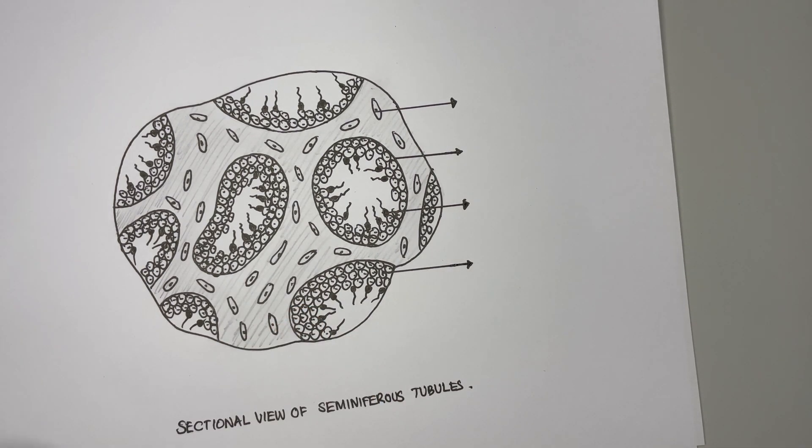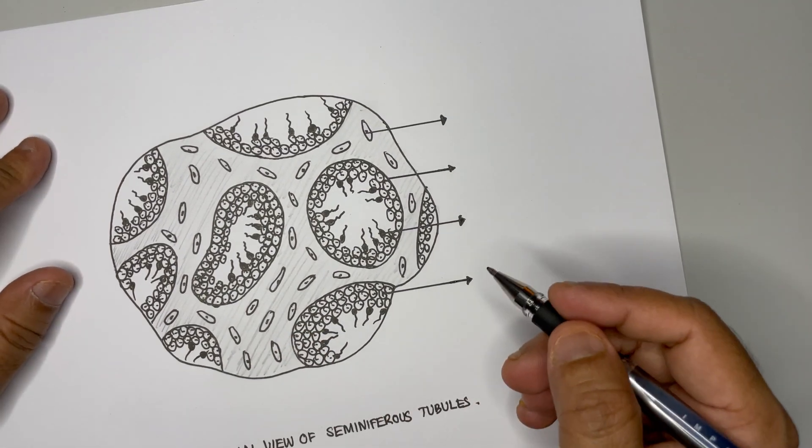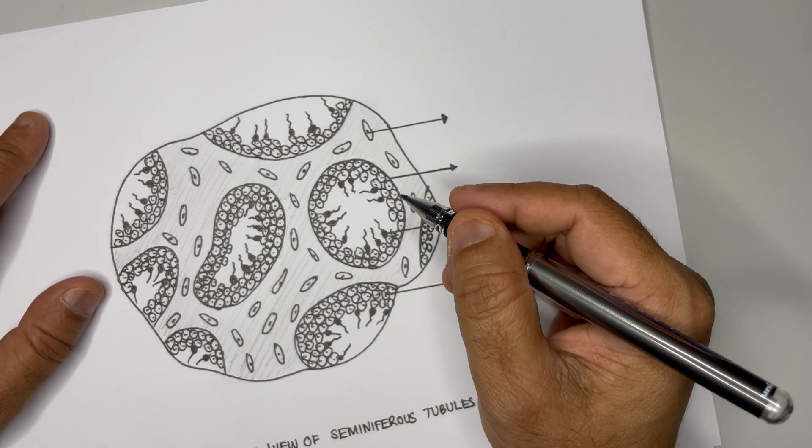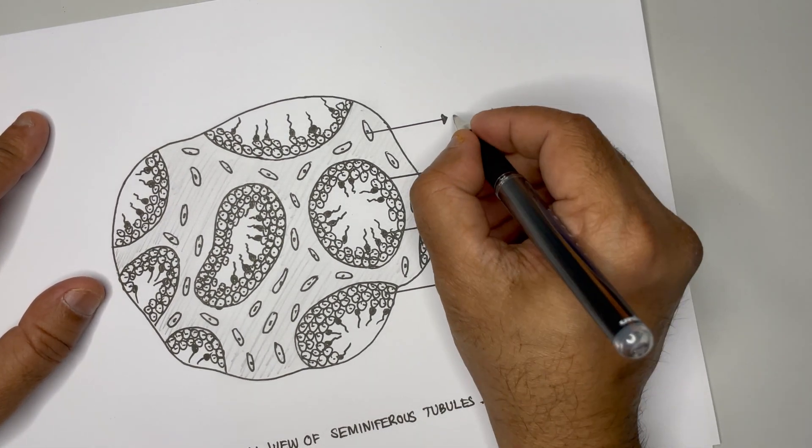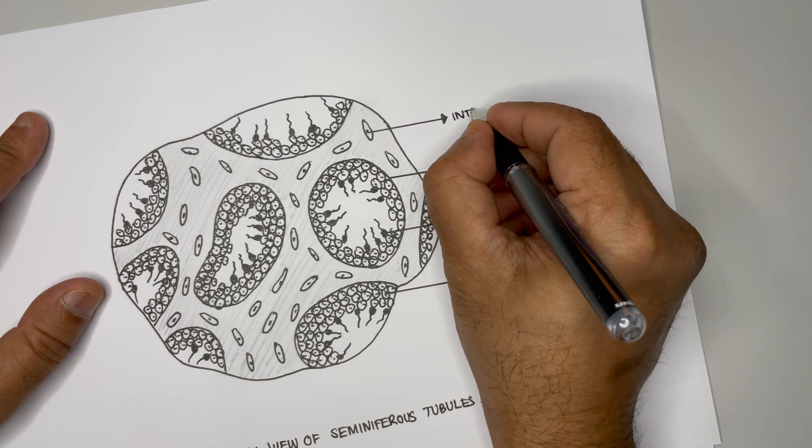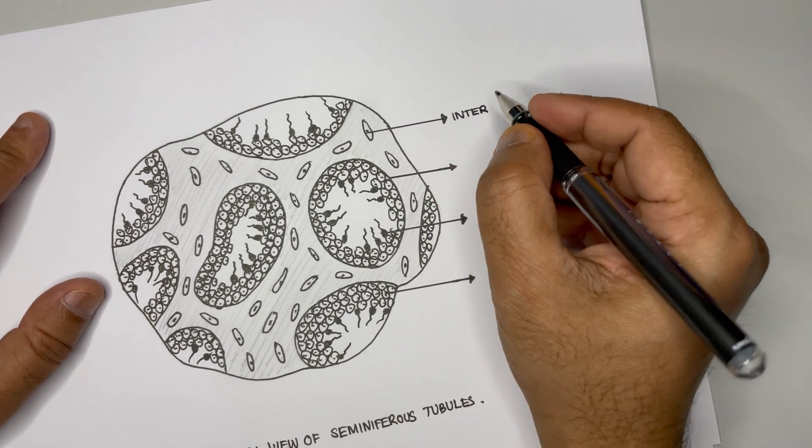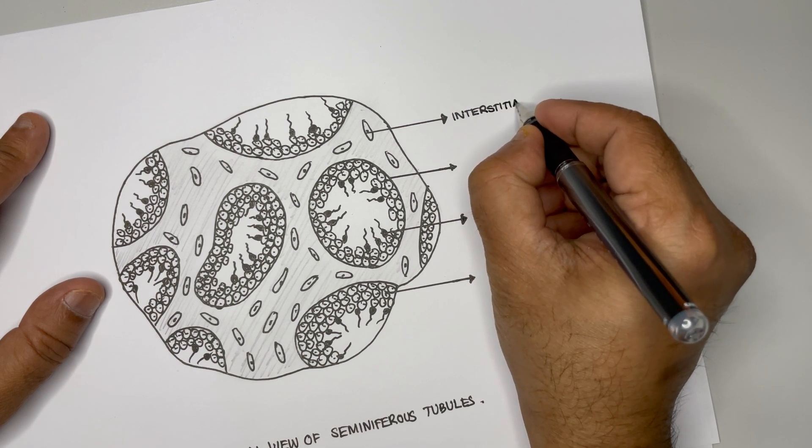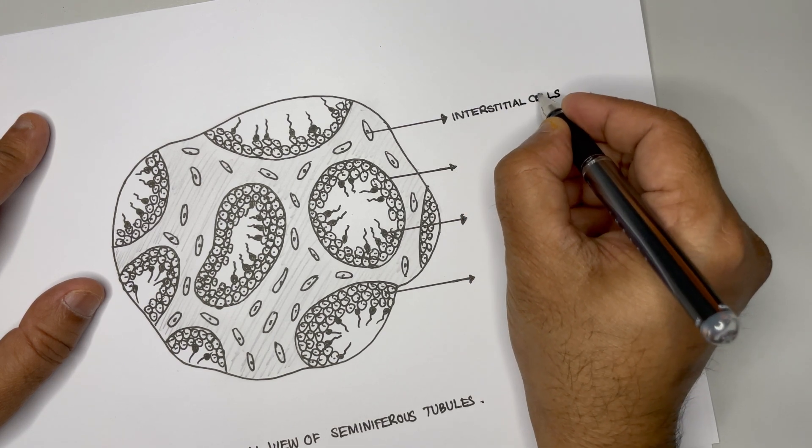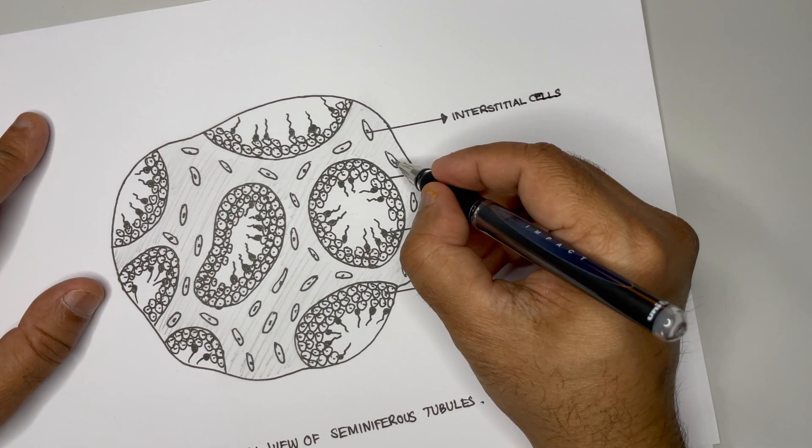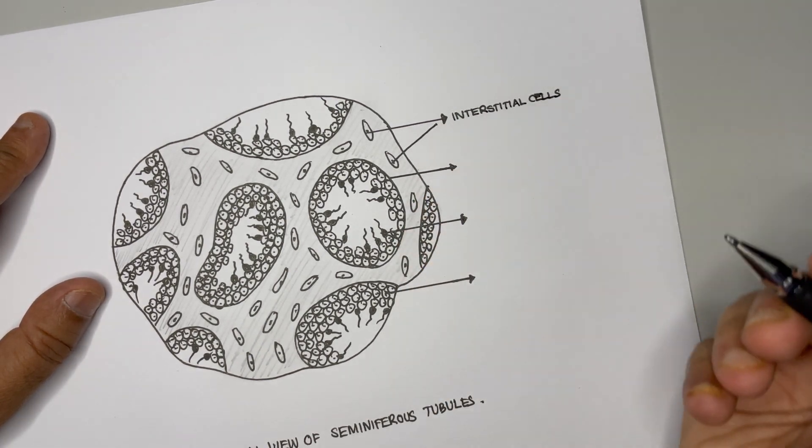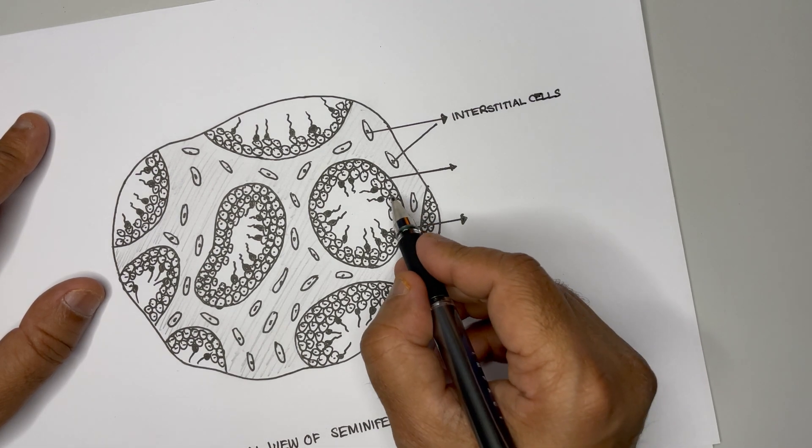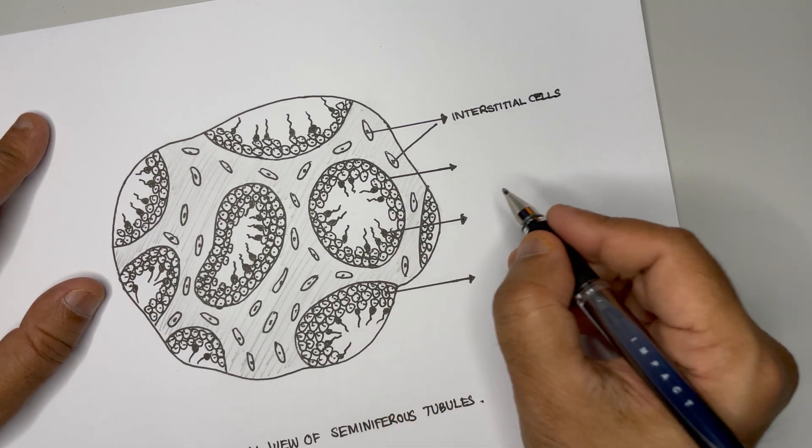That's all the major labelings that we need. So let's go ahead with the labels. This is the interstitial cells. Let me draw one over here. And now next one is this one, the seminiferous tubule.